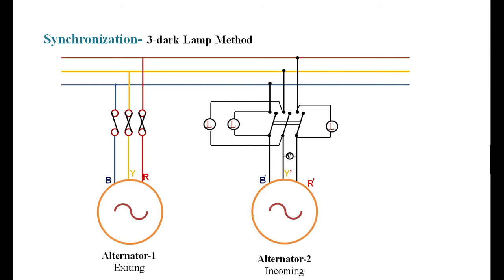The second condition to fulfill is frequency — the frequency of the incoming machine must match the bus bar frequency. The third important condition is phase sequence — the phase sequence of the incoming machine must be the same as the bus bar phase sequence. To judge this, just build up a small voltage and observe the lamps: if all the lamps are flickering — going dark and bright simultaneously — you can conclude that the incoming machine has the same phase sequence.